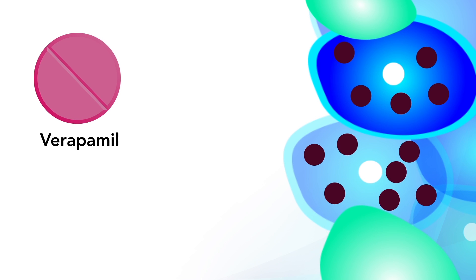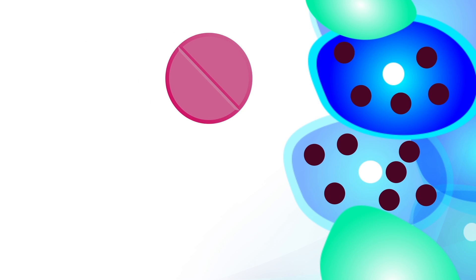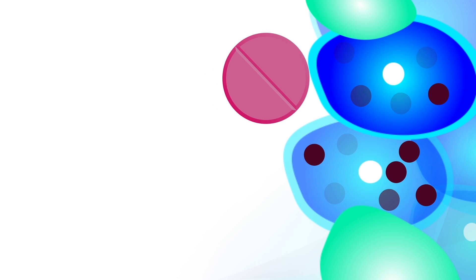The scientists also discovered that verapamil, a drug widely used to treat high blood pressure, can lower TXNIP levels in beta cells.